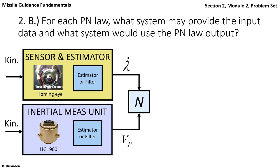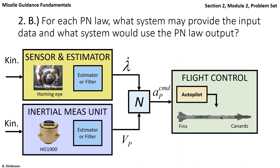And then with those instantaneous values of VP and lambda dot, we have our desired acceleration normal to the body x axis. The flight control system receives that command, produces the correct fin or canard adjustments to achieve a desired acceleration.